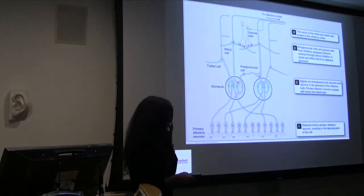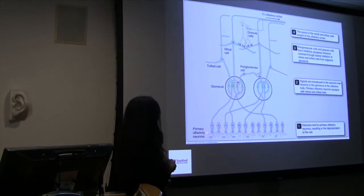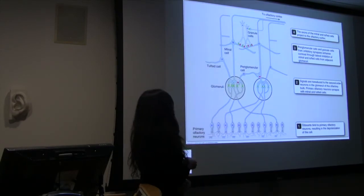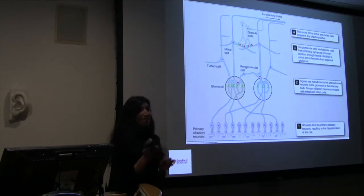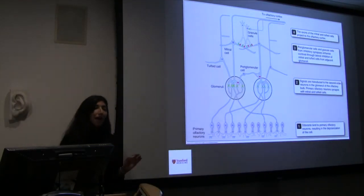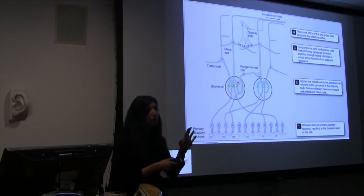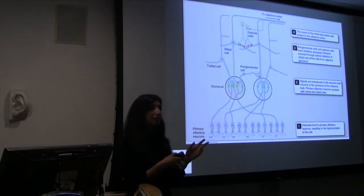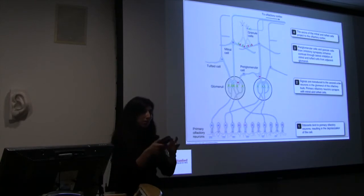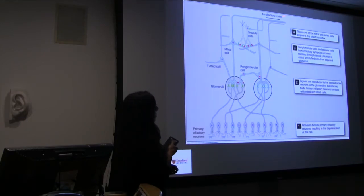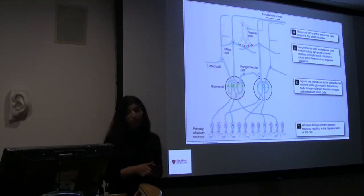Going back to how the system is made up: you have your primary olfactory receptor neurons, and once they go past the cribriform, they synapse in glomeruli in the olfactory bulb. What's interesting is that all of the same type of olfactory receptor neuron find their way to synapse in the same particular glomeruli — probably four across our two olfactory bulbs, two on either side. Then second-order neurons go up towards the olfactory cortex through the olfactory tract.